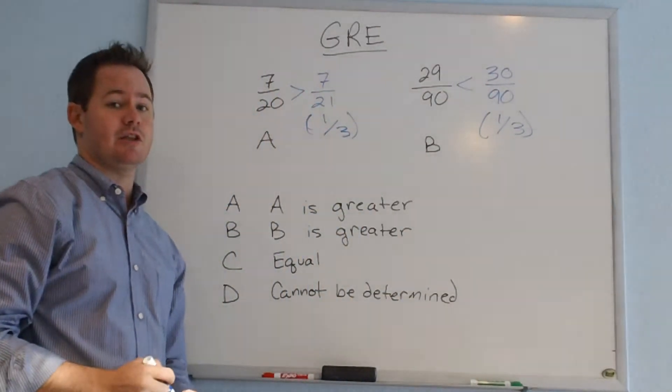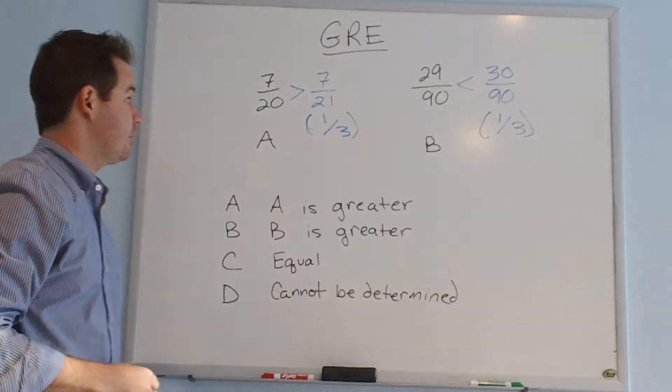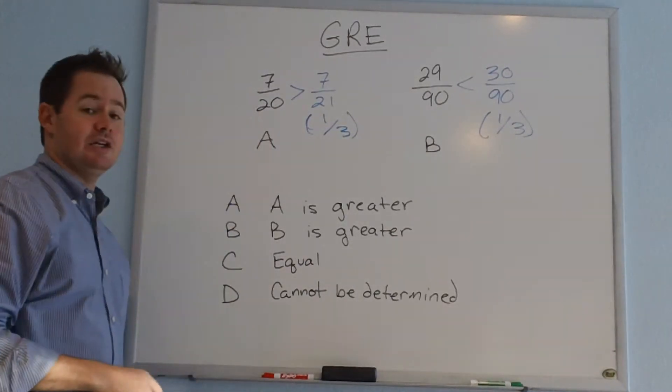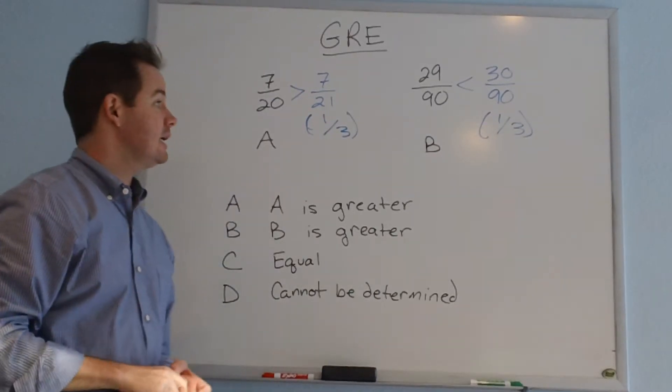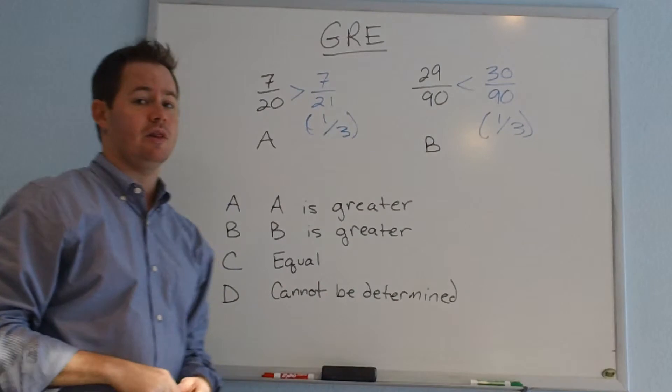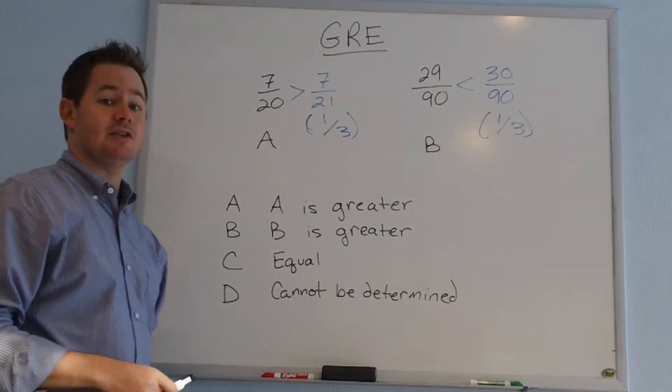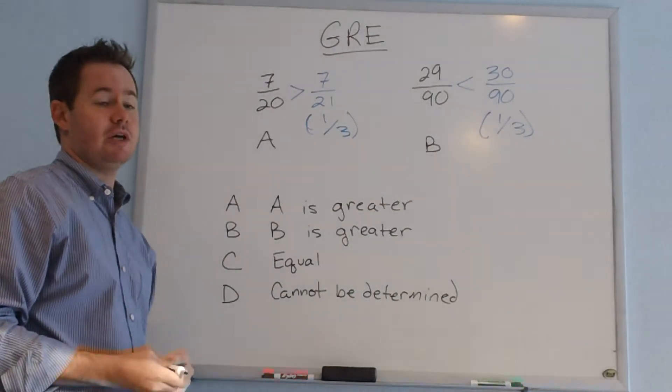In comparison to that reference value of 1 third, 7 over 20 is greater than 1 third, and 29 over 90 is less than 1 third. So if we have to decide between columns A and B, which one is greater,